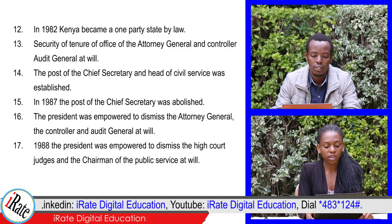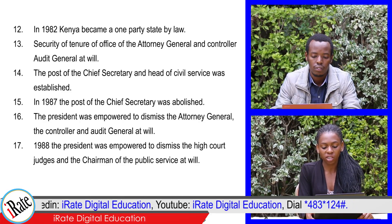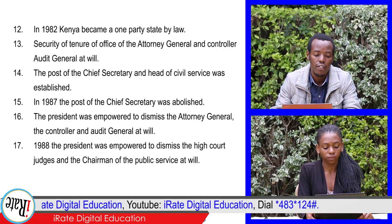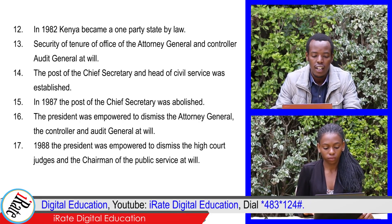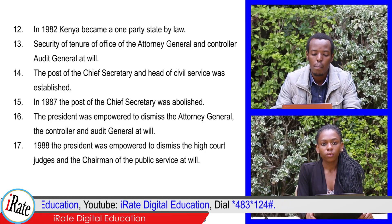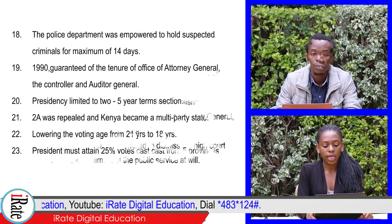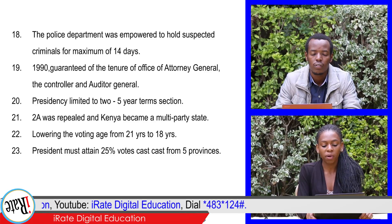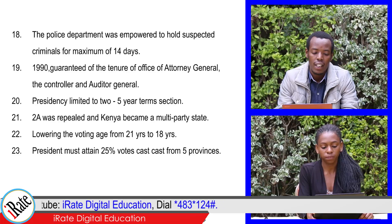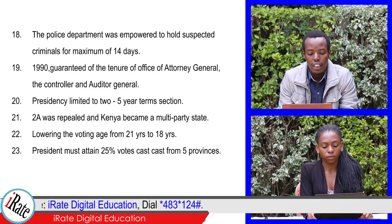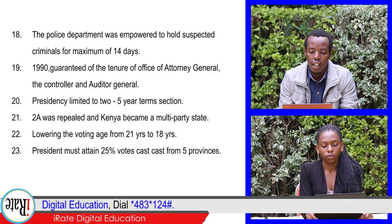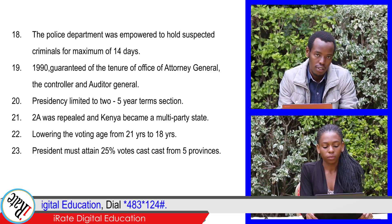16. The President was empowered to dismiss the Attorney General and the Controller and Auditor General at will. 17. The police department was empowered to hold suspected criminals for a maximum of 14 days. 19. The tenure of office of the Attorney General and the Controller and Auditor General was guaranteed.